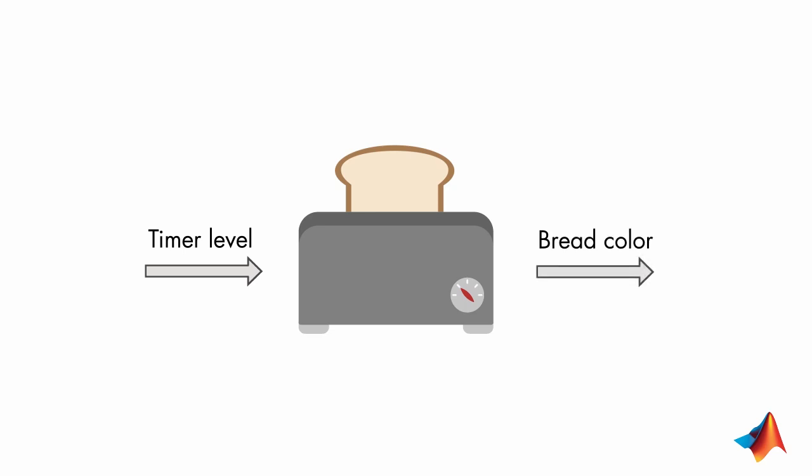Here, the toaster with the bread is an open-loop system that takes an input time and gives an output bread color.